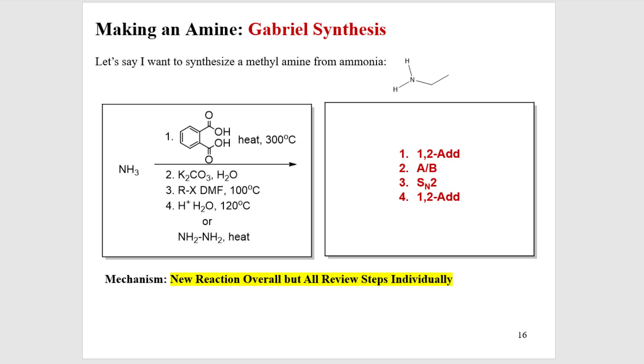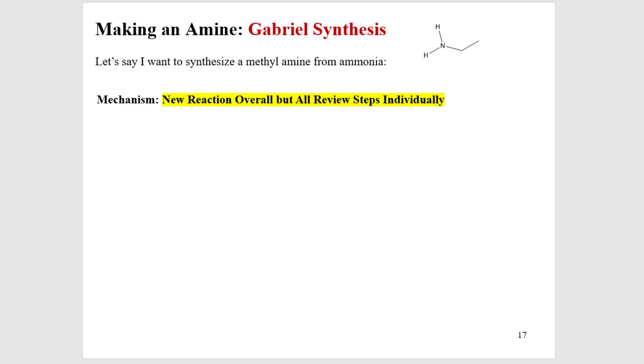A Gabriel synthesis is a tried and true old school method for creating the goal of a primary amine. Again, with whatever alkyl group you would like, as long as you stick within the confines of SN2 chemistry. You can't stick a t-butyl group on here because of steric hindrance. Now, don't be afraid, it looks long, but it's actually a series of very simple reactions we've already done. This is new reaction overall, but each and every step is review step. It has a special name, the Gabriel synthesis.